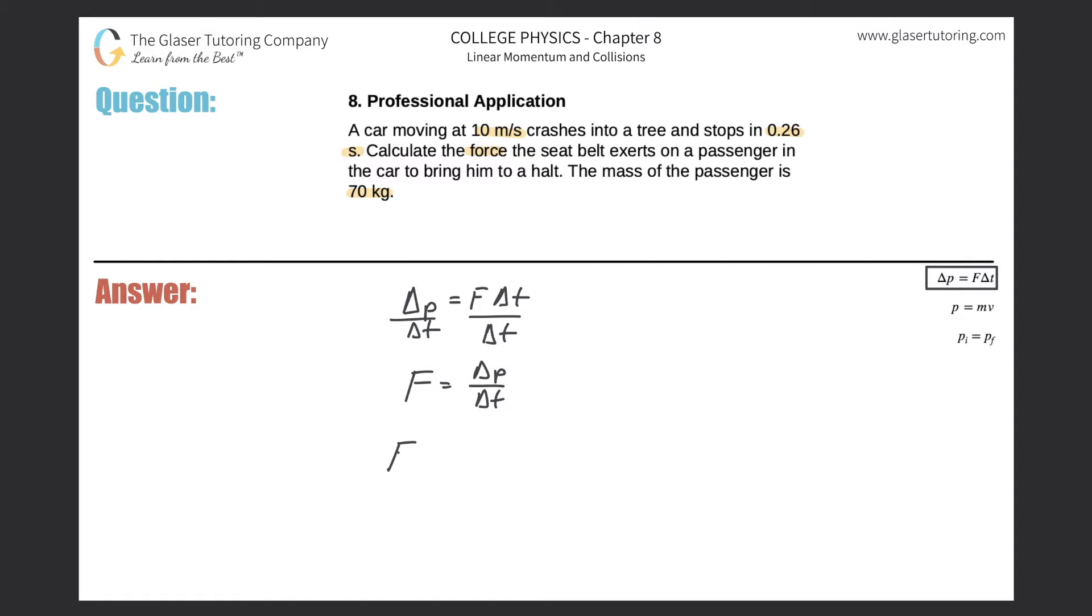The force here applied will be equal to the mass of the passenger multiplied by his final velocity minus the mass of the passenger multiplied by his initial velocity, all over the change in time.